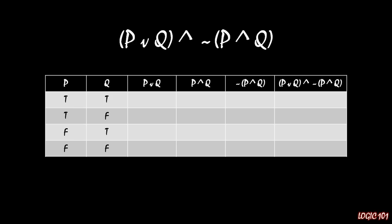Let's start with column three — the disjunction between P and Q. Remember that a disjunction is TRUE when at least one part is true, and FALSE when both parts are FALSE. So we have a truth value of TRUE in the first three rows and FALSE in just the bottom row.